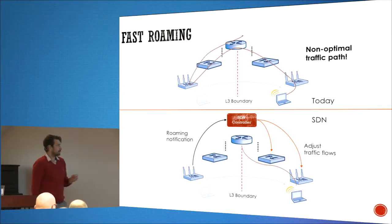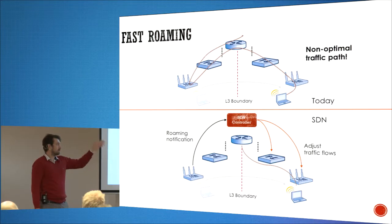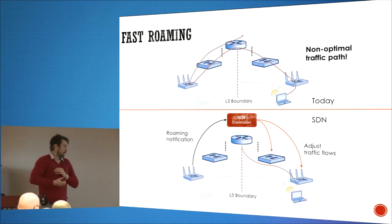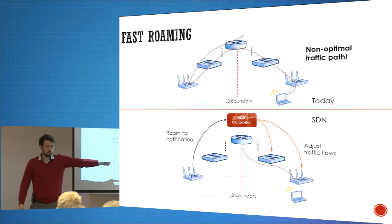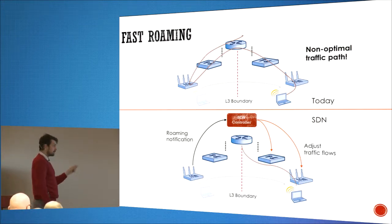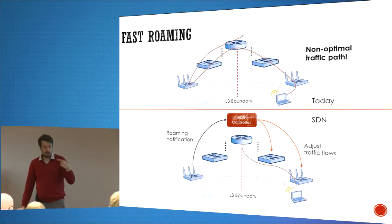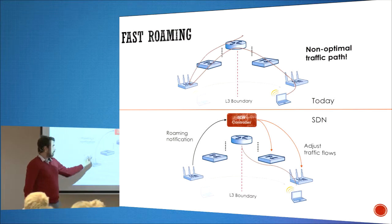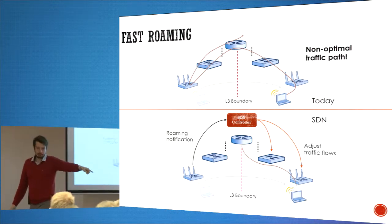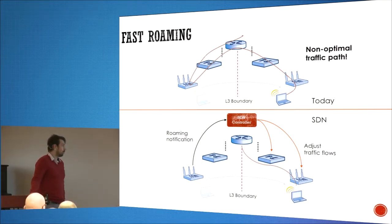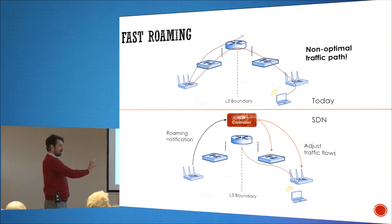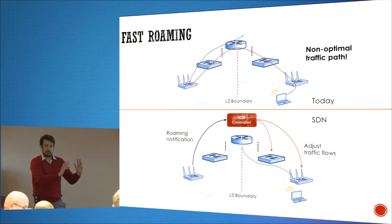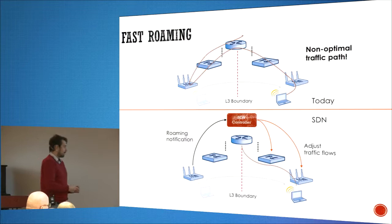The second example is fast roaming. When we roam across a layer-3 boundary today, we do some sort of tunneling to keep the session intact. Ideally, the network path would also shift with the session — this is possible with an SDN controller. The issue is how long it takes before the roaming notification comes to the controller and the controller reprograms the network. If your controller is on site, it can take up to 1.5 seconds. You have to distribute the control from the server. So it is a good use case, but in mission-critical enterprise networks, this probably isn't the solution — not yet, anyway.